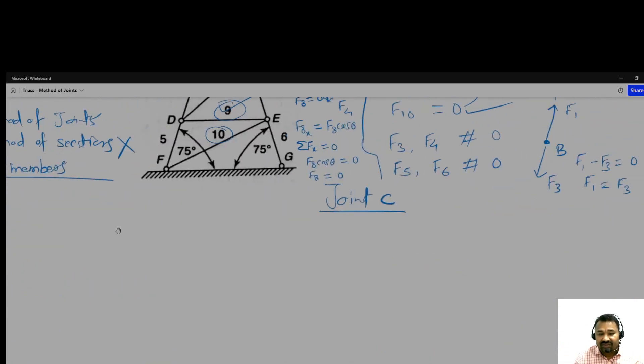There may be a situation like this is the joint and these are members 1 and 2. What about forces F1 and F2? F1 will be zero, F2 will be zero. Why? Because the joint is free from loading. There is no load.